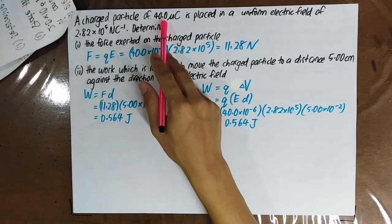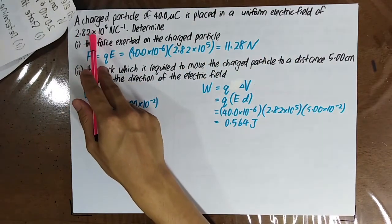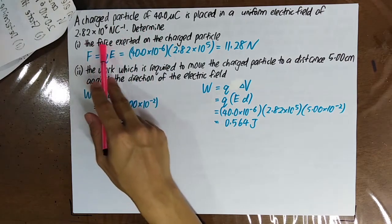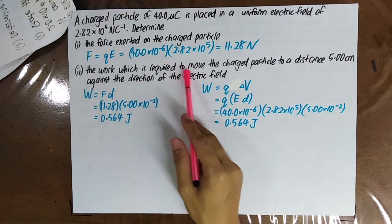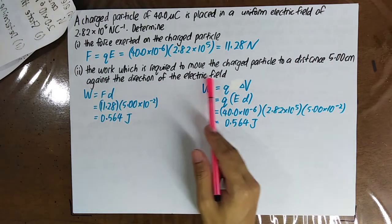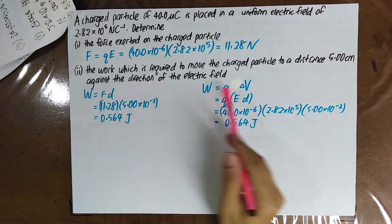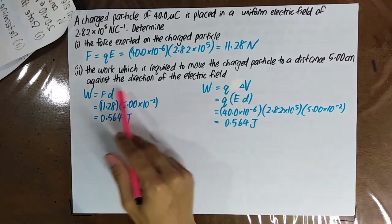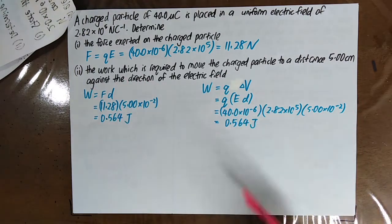A charged particle of 40 microcoulombs is placed in a uniform electric field of 2.82×10⁵ N/C. Determine the force exerted: F = qE. To find the work required to move the charge particle 5 cm against the direction of the electric field, use either W = F·d or W = q·ΔV — both formulas give the same answer.